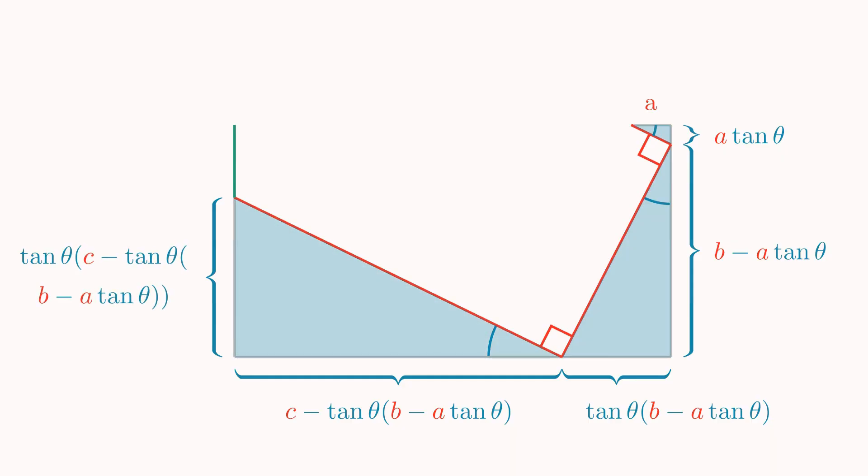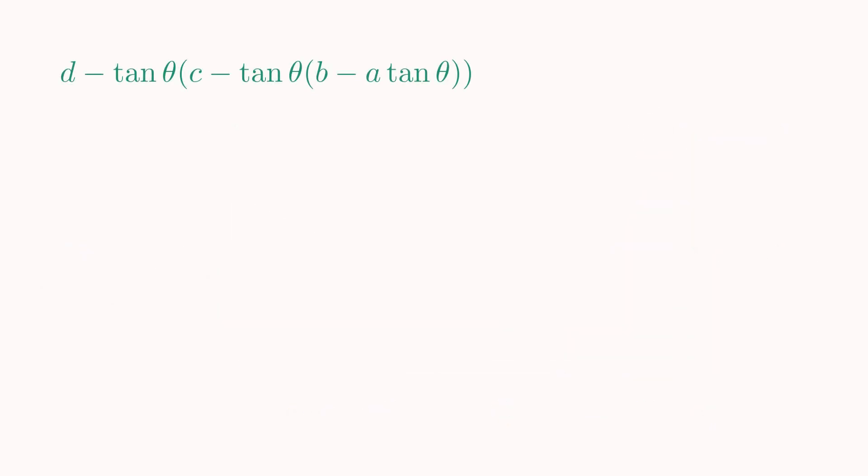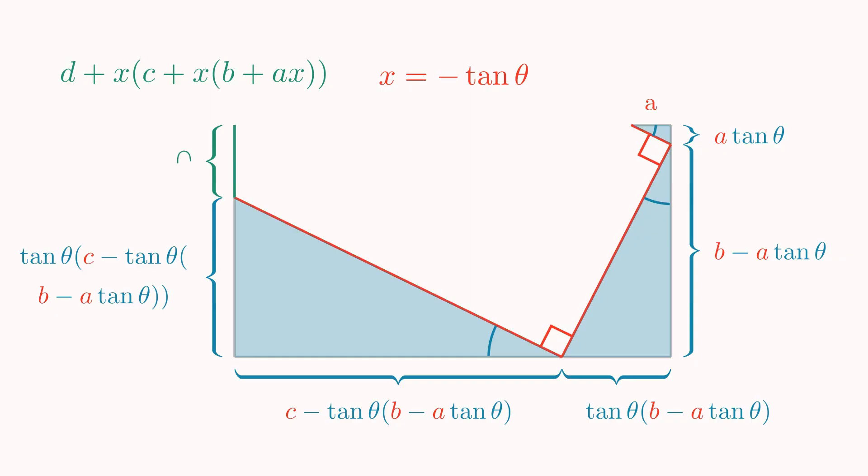We find that its length is equal to this. Look familiar? Let's look back at the Horner form we had earlier. If we replace the negative tan theta with x, it reveals that the length of that green segment, when we launch the laser at some angle theta, is equal to the original polynomial evaluated at x. If we reduce this length down to zero, we get the x values for which the polynomial is zero, which gives us the roots we were after.